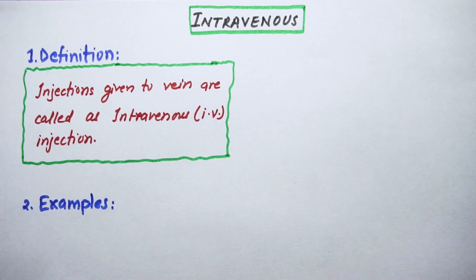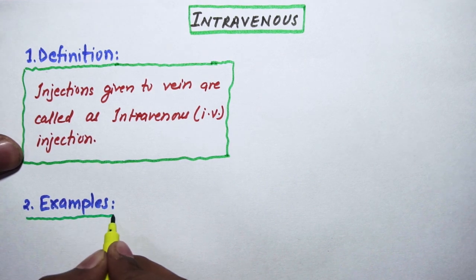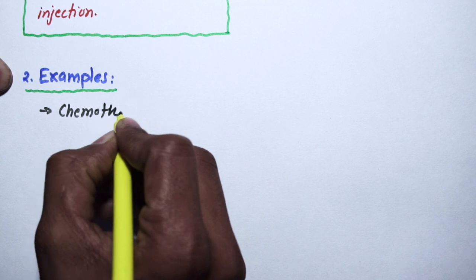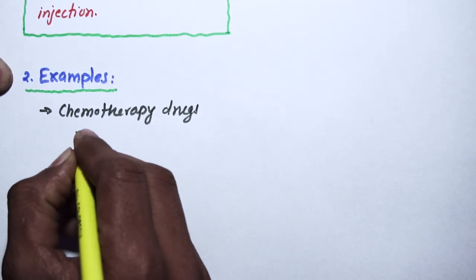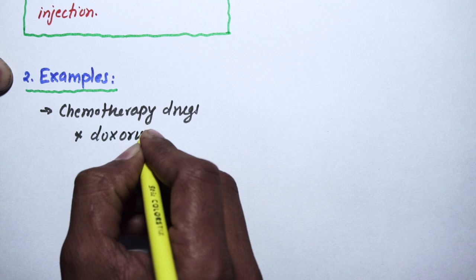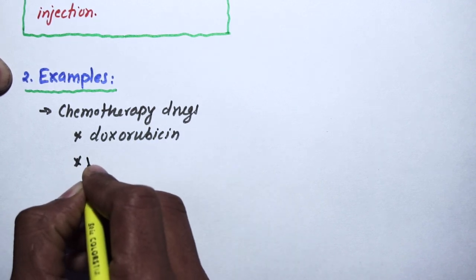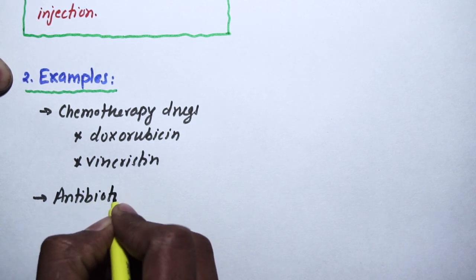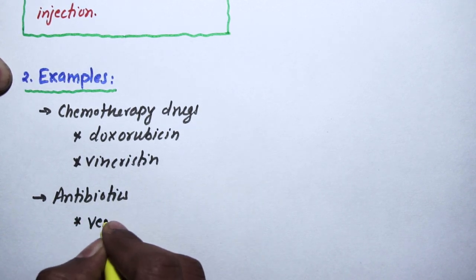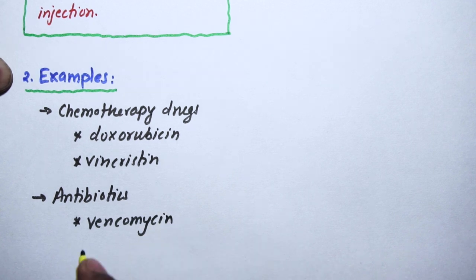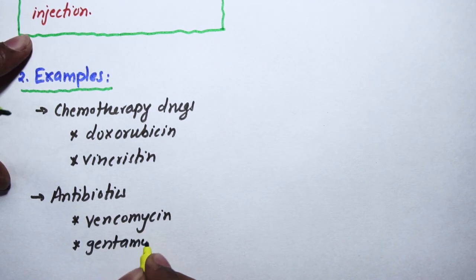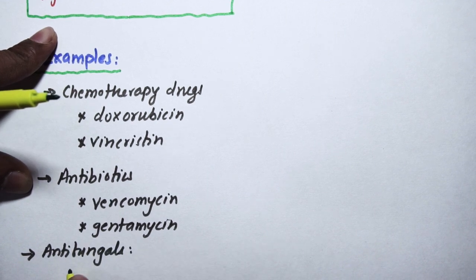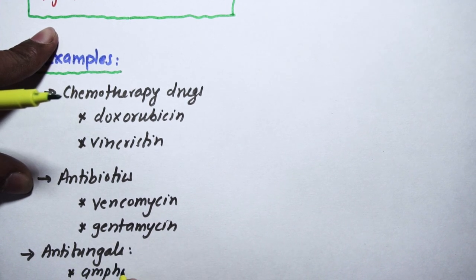Now we will see a few examples of intravenous route. First one is chemotherapy drugs like doxorubicin, vincristine, and antibiotics like vancomycin, gentamicin, and antifungals like amphotericin.